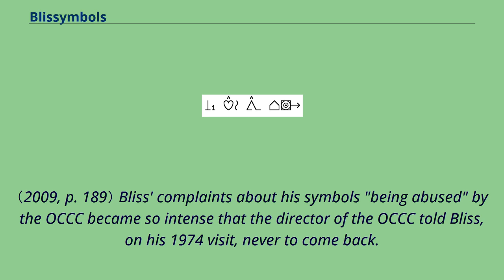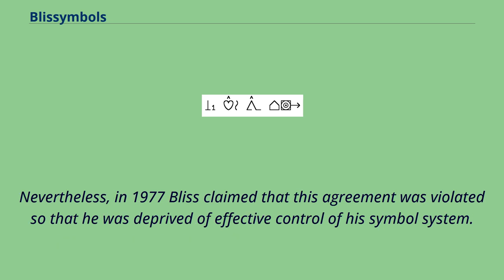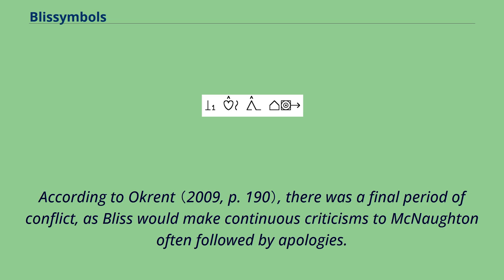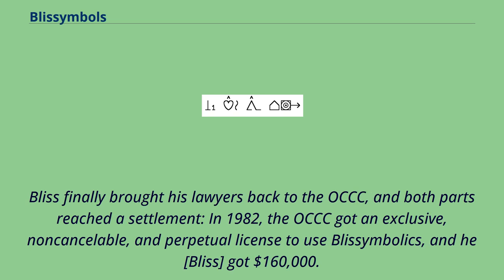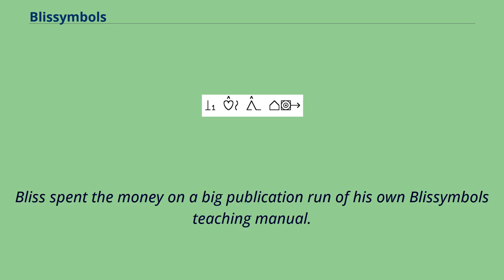Bliss's complaints about his symbols being abused by the OCCC became so intense that the director of the OCCC told Bliss, on his 1974 visit, never to come back. In spite of this, in 1975 Bliss granted an exclusive world license for use with disabled children to the new Bliss Symbolics Communication Foundation directed by Shirley MacNaughton. Nevertheless, in 1977 Bliss claimed that this agreement was violated so that he was deprived of effective control of his symbol system. According to Okrant, there was a final period of conflict, as Bliss would make continuous criticisms to MacNaughton, often followed by apologies. Bliss finally brought his lawyers back to the OCCC, and both parties reached a settlement. In 1982, the OCCC got an exclusive, non-cancellable, and perpetual license to use Bliss Symbolics, and Bliss got $160,000. Easter Seals, the charitable foundation, paid the settlement. Bliss spent the money on a big publication run of his own Bliss Symbols teaching manual.